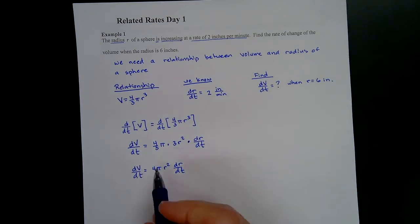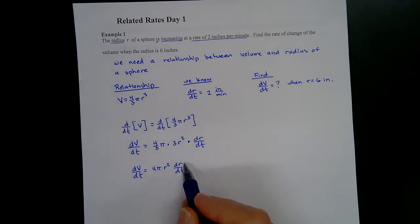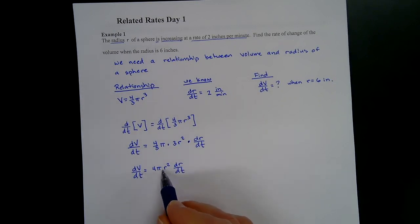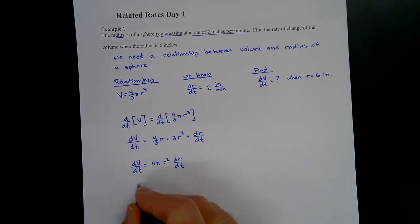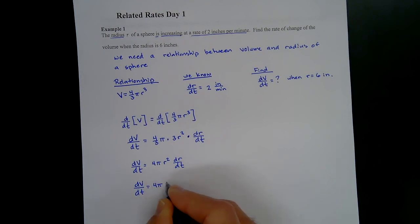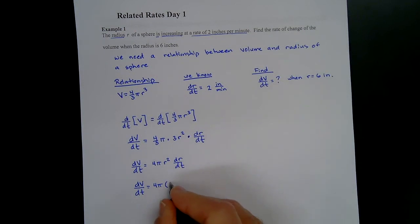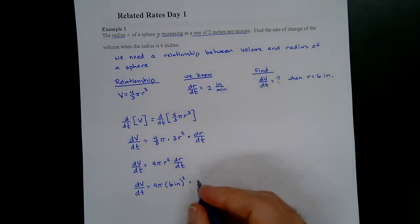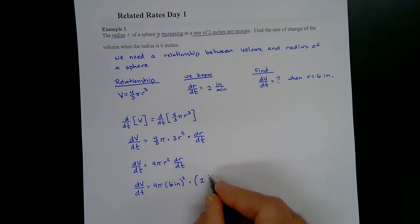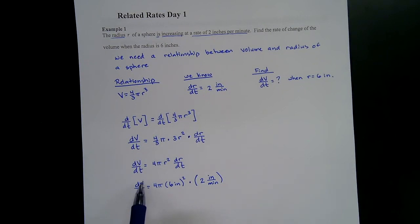The volume change depends on both the radius and the rate at which the radius is changing. Now plugging in the numbers: dV/dt equals four pi times six inches squared times two inches per minute.